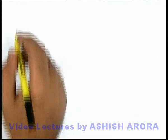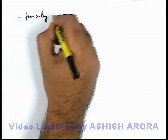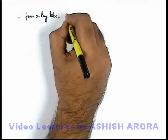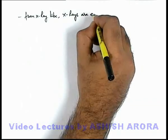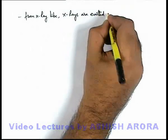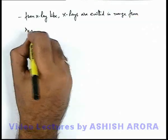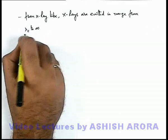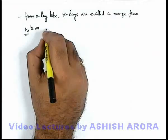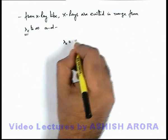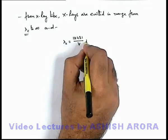As we've discussed on the previous sheet that from x-ray tube, x-rays are emitted in range from lambda c to infinity where lambda c was the cut-off wavelength. And here lambda c can be given as we've just now calculated 12431 by V angstrom.